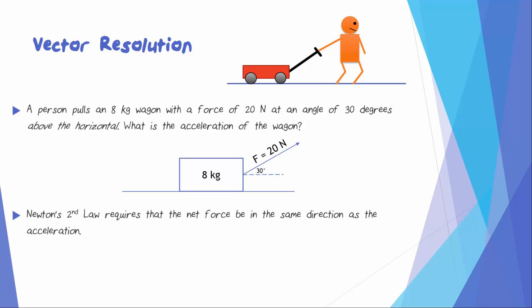Newton's second law requires that the net force be in the same direction as the acceleration. Clearly this wagon is going to accelerate to the right. So the force that we would use to calculate the acceleration must also be to the right.